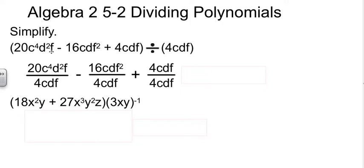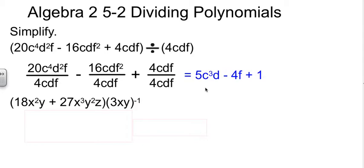So 20C⁴D²F divided by 4CDF, minus 16CDF² over 4CDF, plus 4CDF over 4CDF. Then it's just using the rules from last time to simplify. 20 divided by 4 is 5, C to the 4 minus 1, D to the 2 minus 1, F to the 1 minus 1. So the first term is 5C³D.